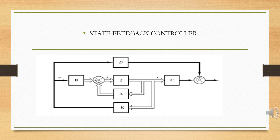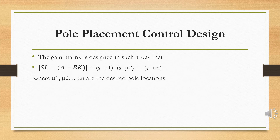The feedback is x through gain block minus K, giving u equals minus Kx. The output equation is y equals Cx plus Du. Combining the state equation and output equation, we obtain the state model. By using state variable feedback, the system matrix A is transformed into A minus BK, and therefore the eigenvalues or poles of the system are transformed to the desired pole locations.